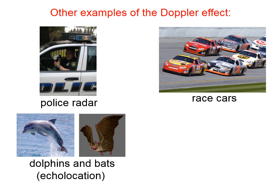Dolphins and bats use echolocation — the same idea. They emit sound waves that travel forwards and bounce back. The waves that bounce back are slightly different from the ones that go out, and the animal can detect that difference to tell if something large is coming towards or away from them, and how fast.